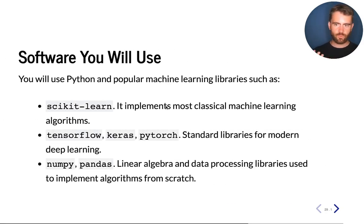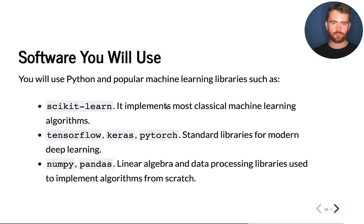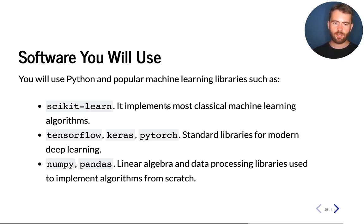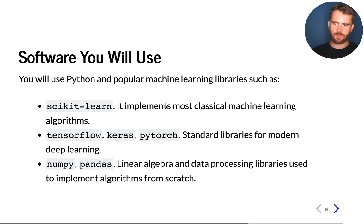Throughout this course, we're going to be using a lot of standard machine learning packages. These packages are all based on the Python programming language. The most important ones are going to be scikit-learn, which is a library that implements many popular and standard core machine learning algorithms. We will also be using deep learning libraries such as TensorFlow, Keras, and PyTorch. All of these libraries are built on top of core linear algebra libraries — NumPy — and pandas, which is more of a data processing library. A lot of our work will involve these libraries, and seeing how algorithms are implemented using them will be really valuable.